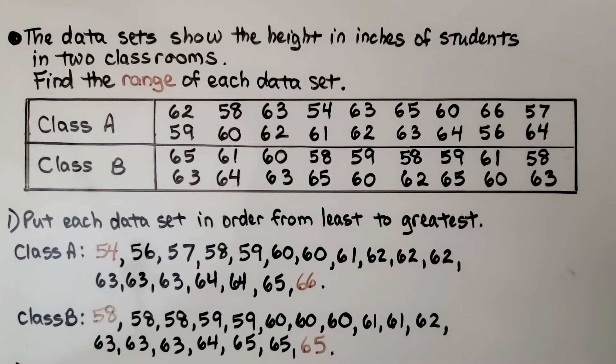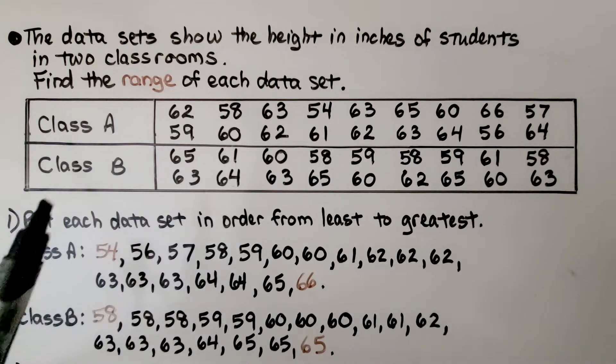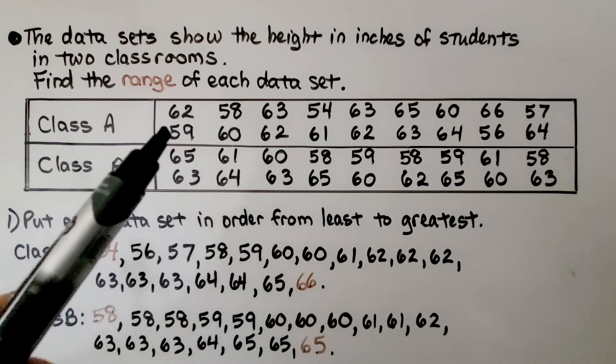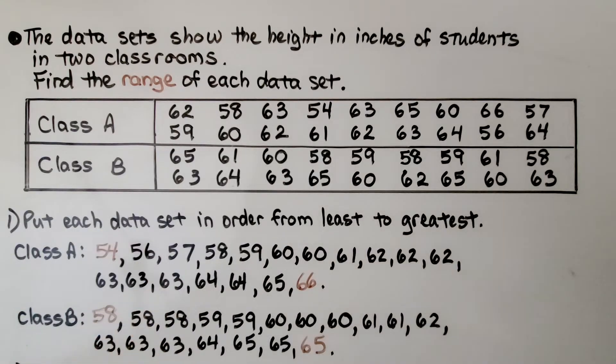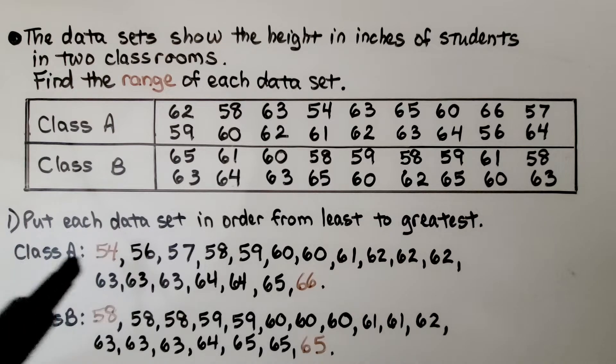The data sets show the height in inches of students in two classrooms. We need to find the range of each data set. So the first thing we do is put each data set in order from least to greatest.